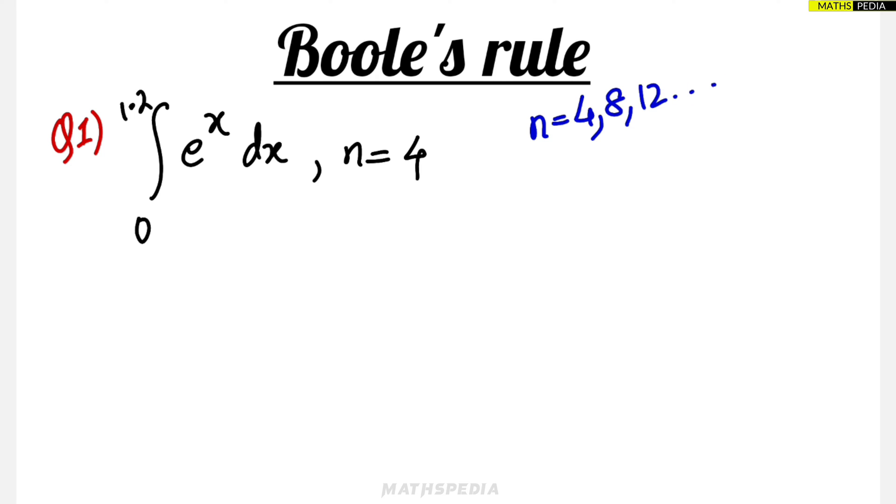The intervals are 4, 8, 12 and so on. In this question they have mentioned n equals 4, but it's not necessary that all questions will mention the interval as 4 or anything else. If they are not mentioning it, then take 8, 12, or 4 - anything is fine, but it is better to take 4 as the interval or 8.